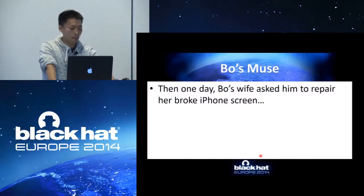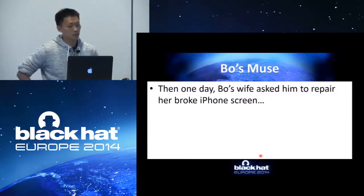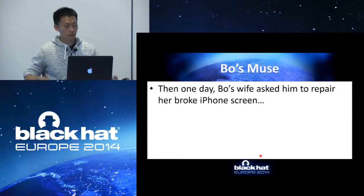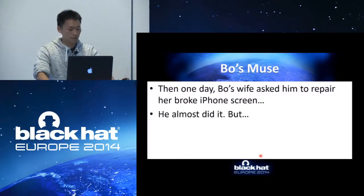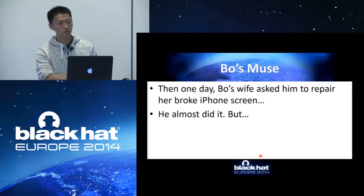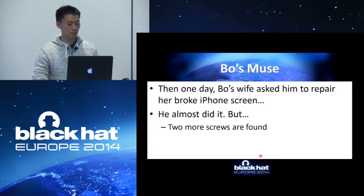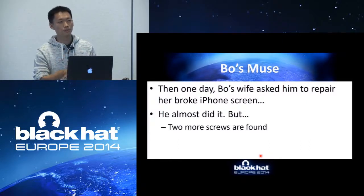One day, something happened that gave us an idea of how to guide the randomness. Bo's wife asked him to repair her broken iPhone screen. As you know, Bo is a great hacker, so no sweat. He almost did it — but after he replaced the screen, we found two more screws on the table. Those screws should have been inside the iPhone, but they were on the table. Something went wrong.